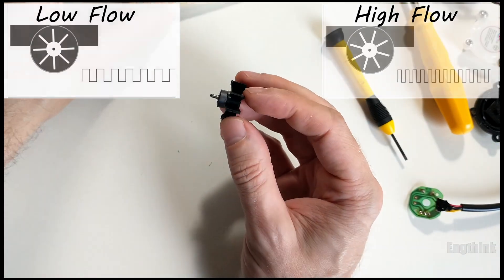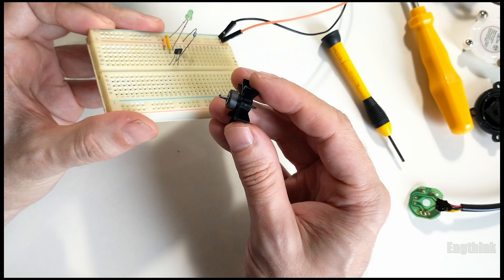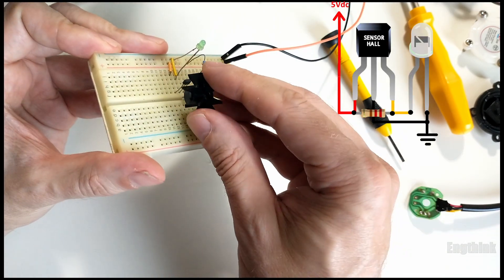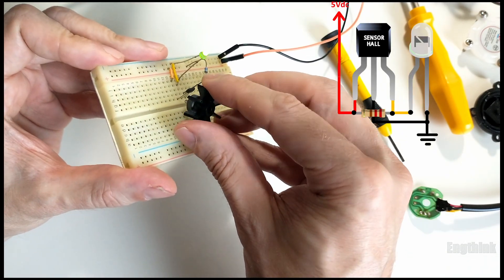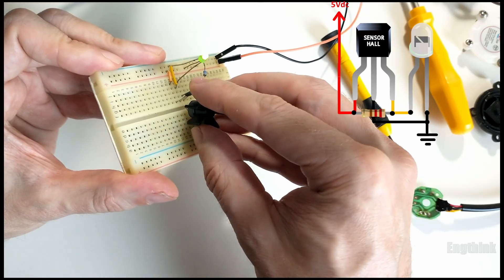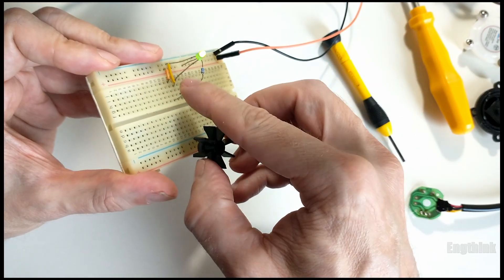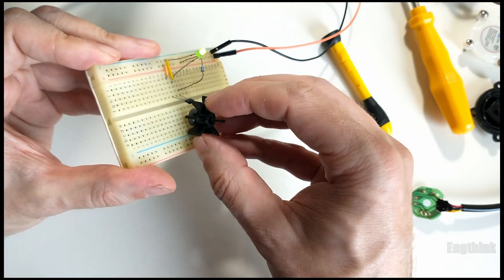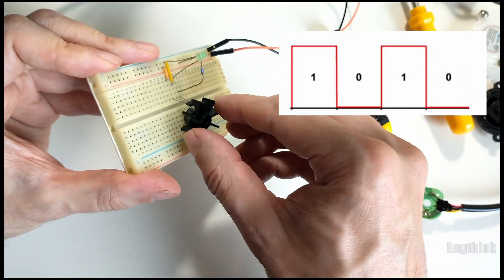To help visualize this, I have set up a breadboard with a similar circuit as the flow sensor PCB circuit. I added an LED so you can see the output activate as the rotor spins. The magnetic field from the rotor acts on the Hall effect sensor, causing it to produce pulses.